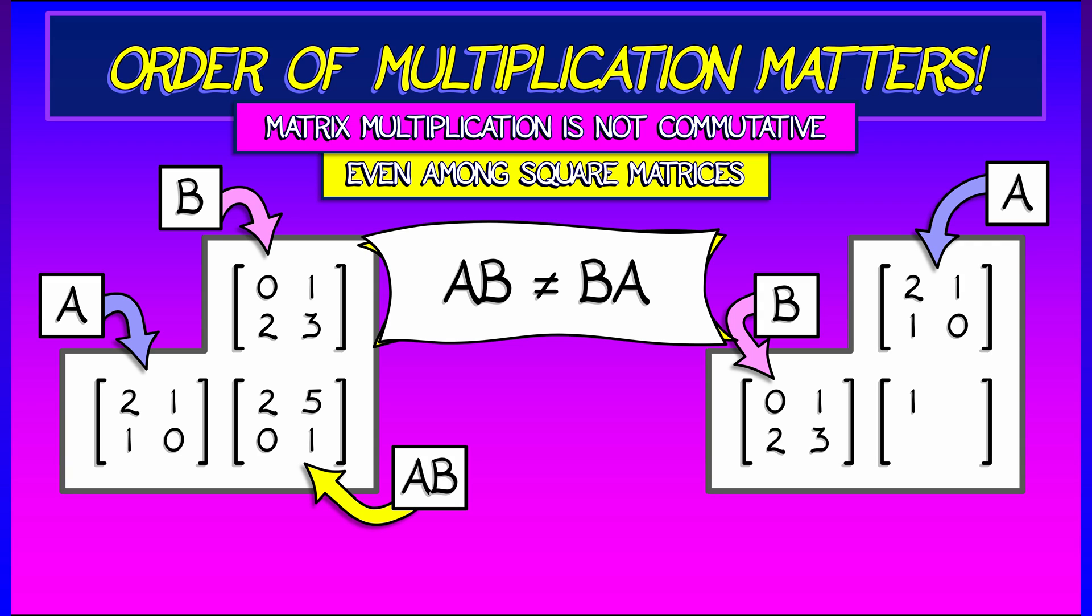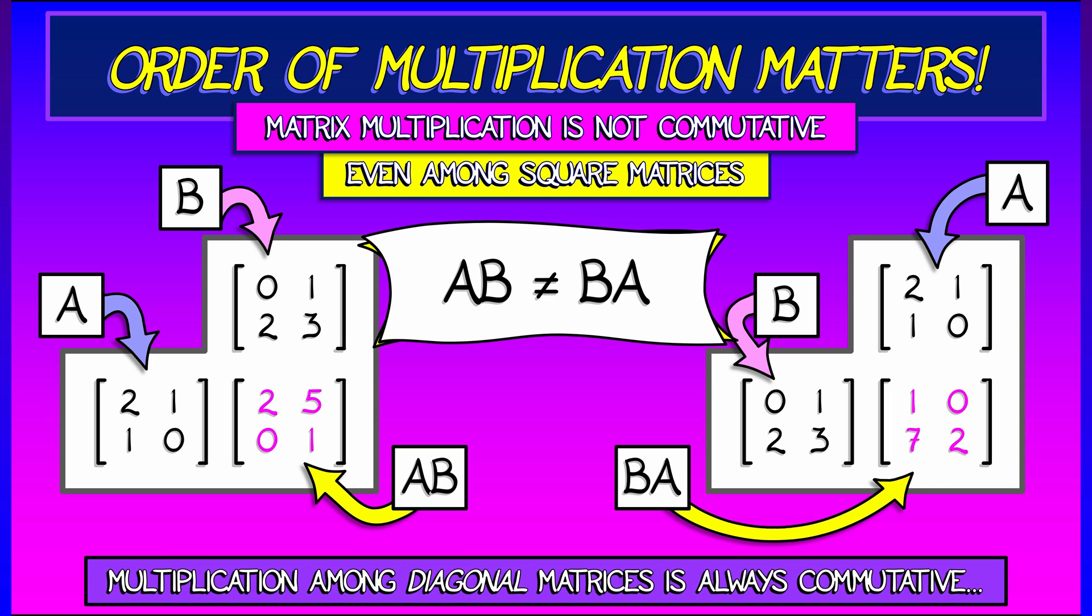What happens when we reverse the order and multiply B times A? Write it down. Check it out. Do the math. If you get 1, 0, 7, 2. That is not the same. Not only are they not the same, they don't differ by a minus sign or by moving the terms around. Nothing like that. They're just totally different.